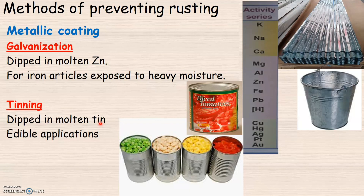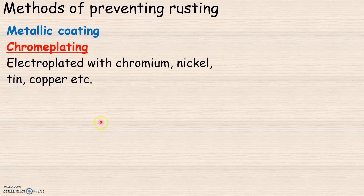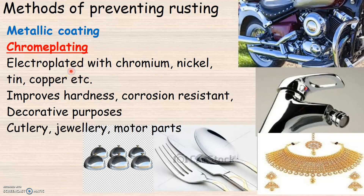The next method of applying a metallic coating on iron is chrome plating. In this method, articles of iron are electroplated with metals like chromium, nickel, tin, copper, etc. This is generally done to coat iron articles used for decorative purposes. Electroplating improves surface hardness and is corrosion resistant, but it is a very expensive method. It is generally used only for cutlery, jewelry, and motor parts.